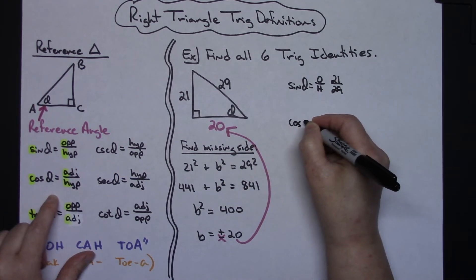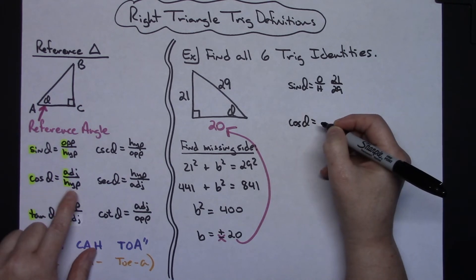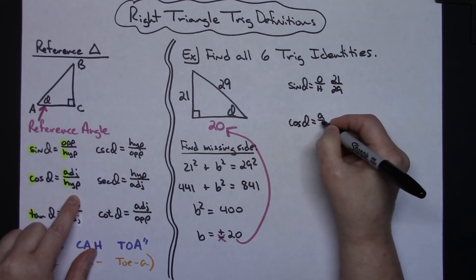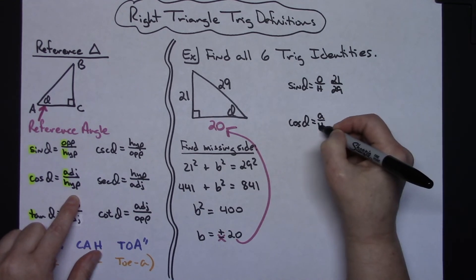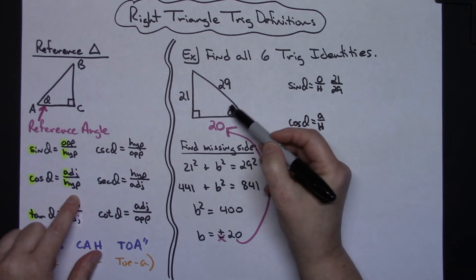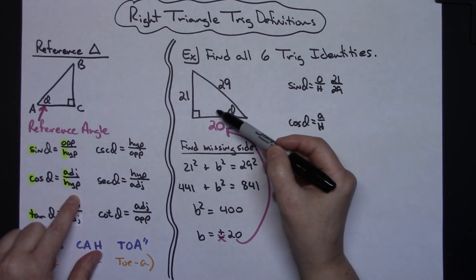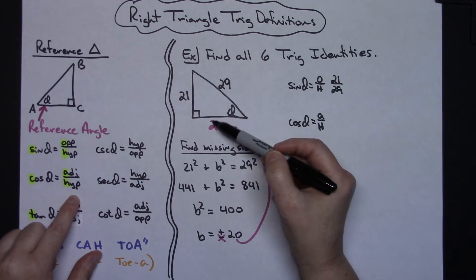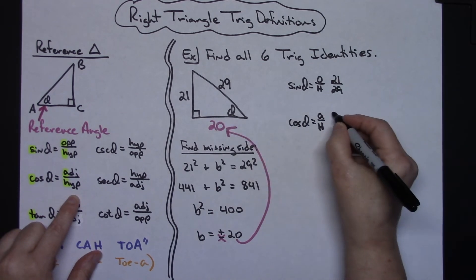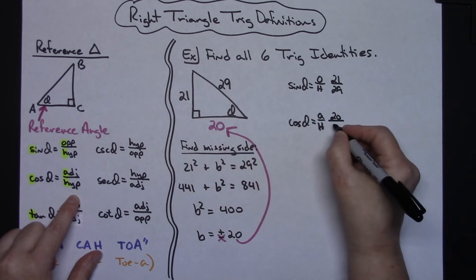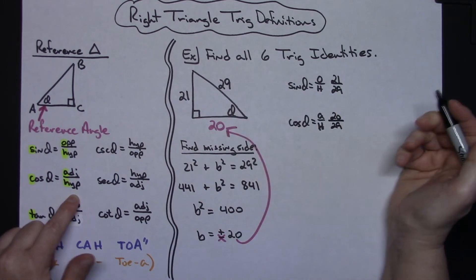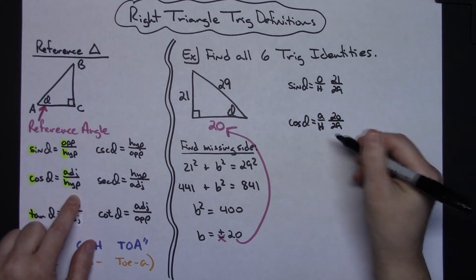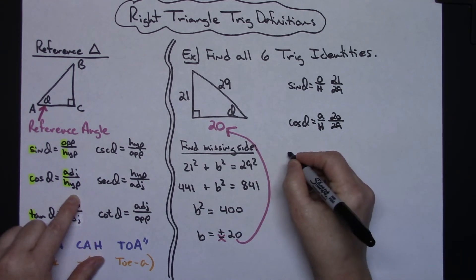For cosine of theta, by definition it's adjacent over hypotenuse, so I write A over H. Here's my reference angle; the adjacent side is the one right next to it, so it's 20, and the hypotenuse is still 29. Cosine of theta equals 20 over 29. Again, if I could reduce that I would, but since I can't I'll leave it just like that.